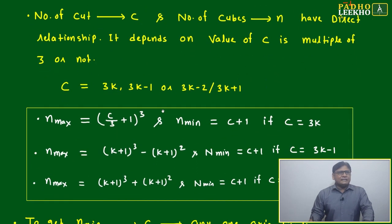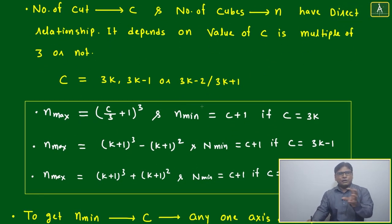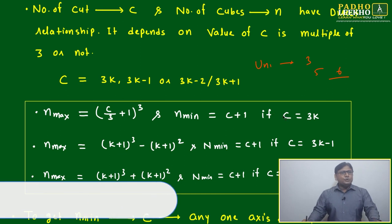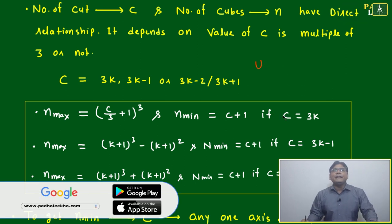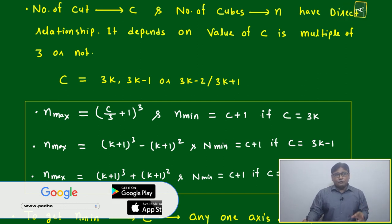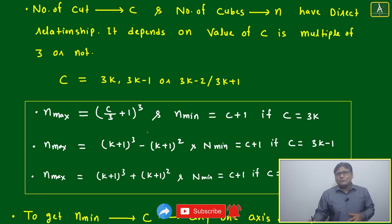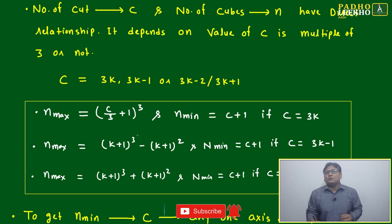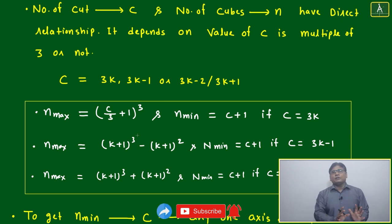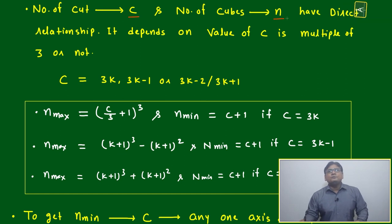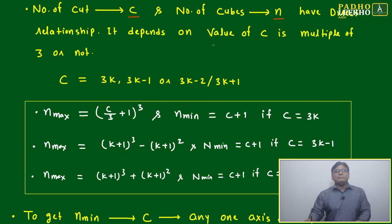We'll take examples and use the same unitary method analogy — 3 cuts, 5 cuts, 6 cuts — and generalize it for any number of cuts in the form of a formula, since we are habituated from childhood to feel comfortable with formulas. The number of cuts c and the number of cubes n have a direct relationship, depending on the value of c.